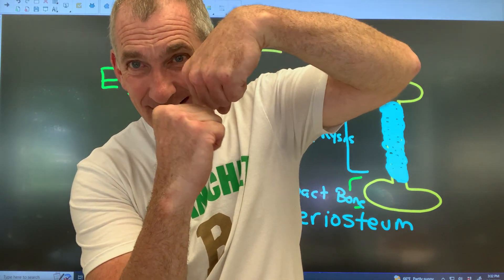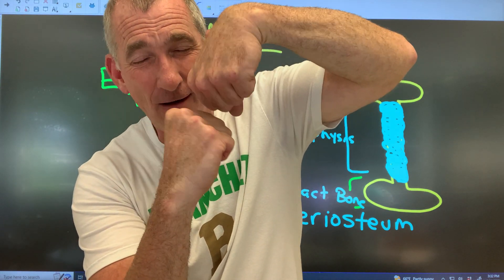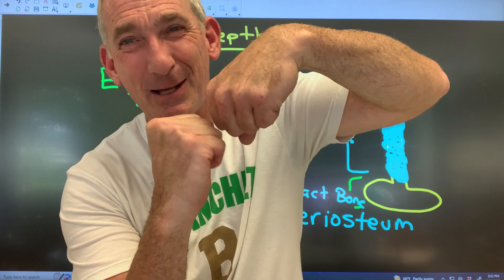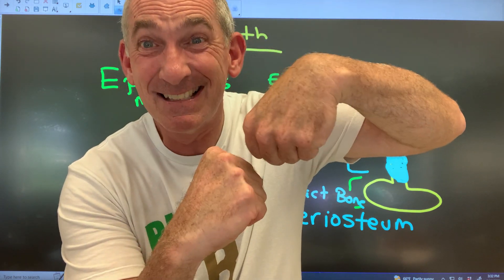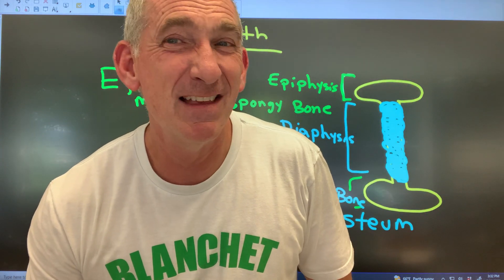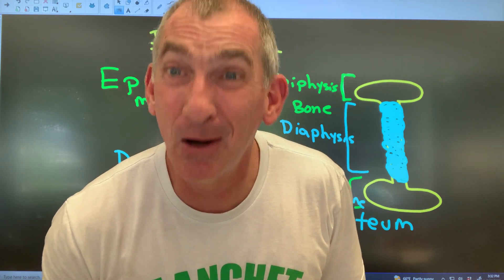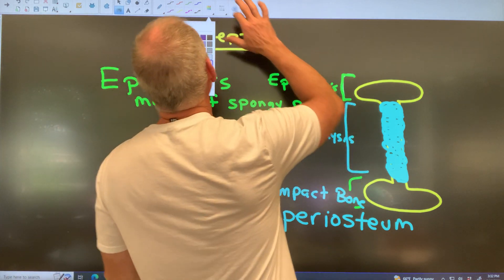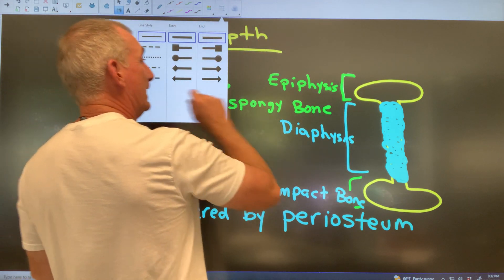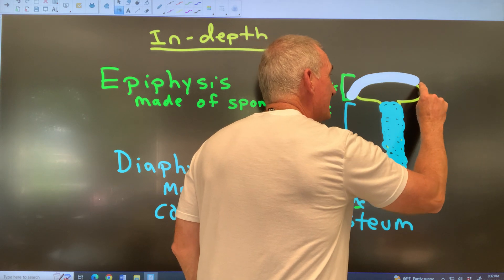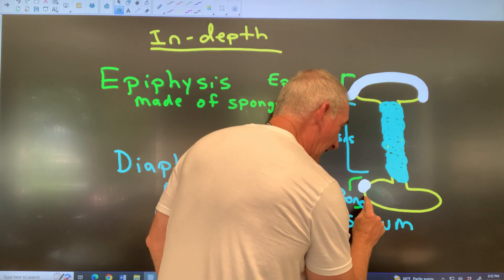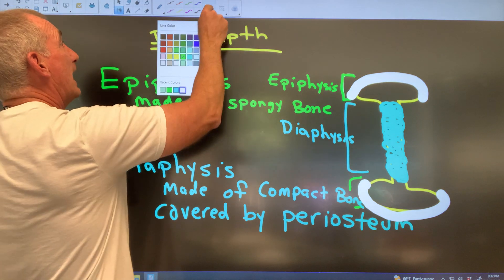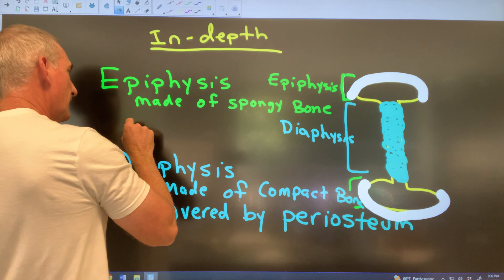Now the epiphyses — the ends — are covered by the slippery stuff in the human body. Do you know the name? Yes — it's covered by this white slippery stuff called cartilage. I'm writing it down right here in rave green: the epiphyses are covered by cartilage.